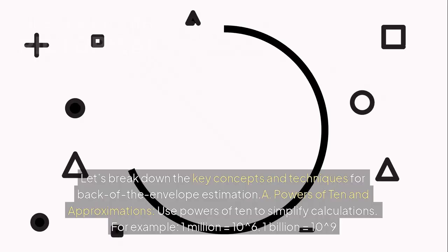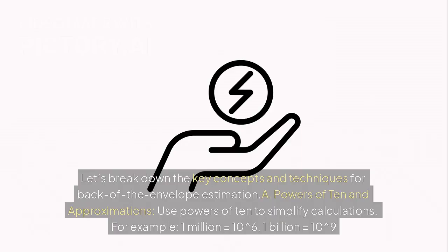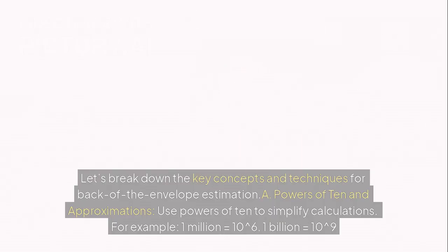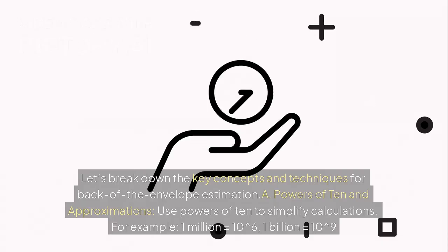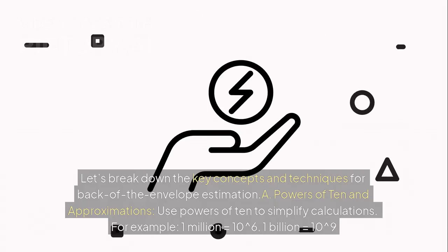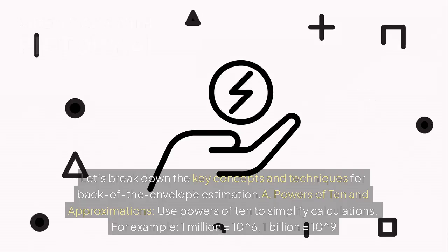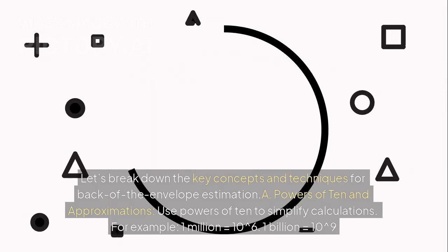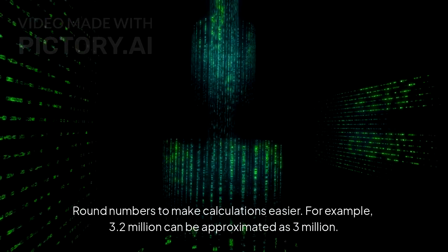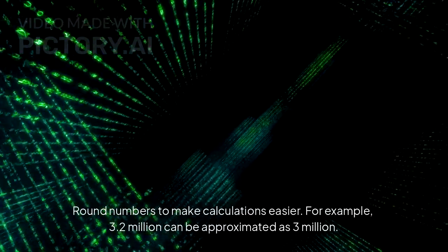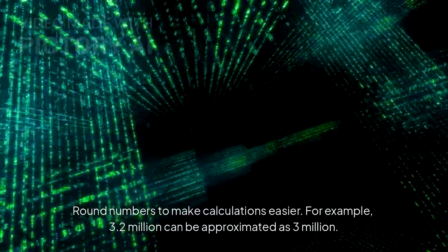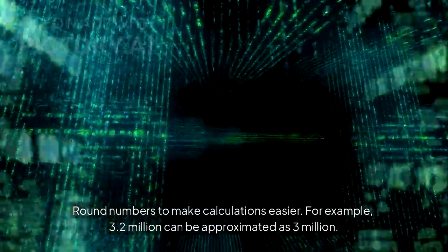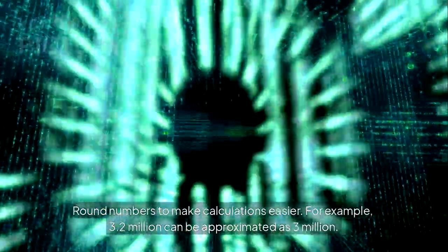Let's break down the key concepts and techniques for Back of the Envelope Estimation. A: Powers of 10 and approximations. Use powers of 10 to simplify calculations — for example, 1 million equals 10 to the power of 6, and 1 billion equals 10 to the power of 9. Round numbers to make calculations easier; for example, 3.2 million can be approximated as 3 million.